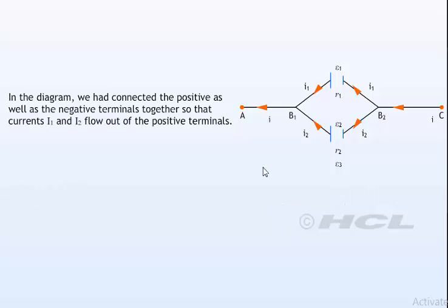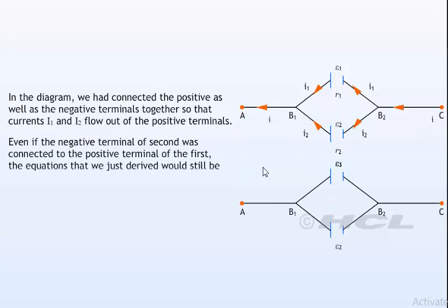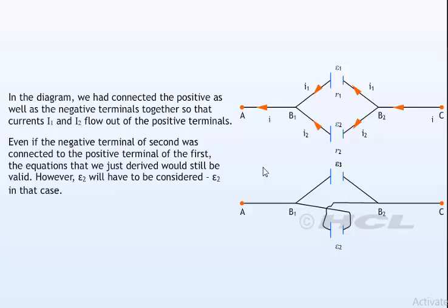In the diagram, we had connected the positive and negative terminals together so that the currents I1 and I2 flow out of the positive terminals. Even if the negative terminal of second was connected to the positive terminal of the first, the equations that we just derived would still be valid. However, E2 will have to be considered minus E2 in that case.